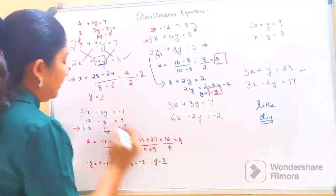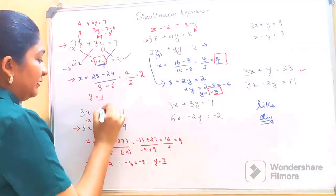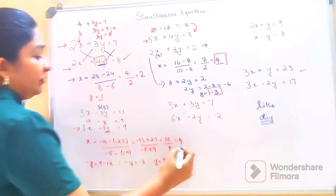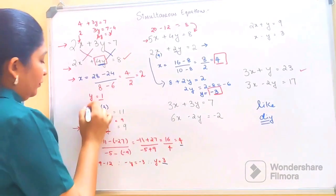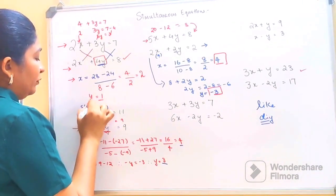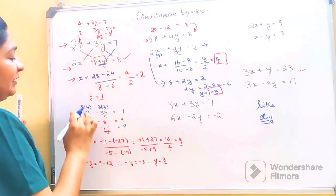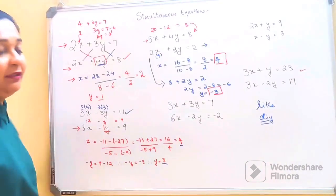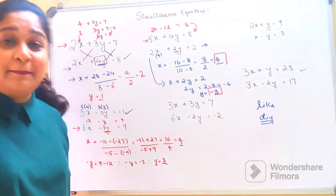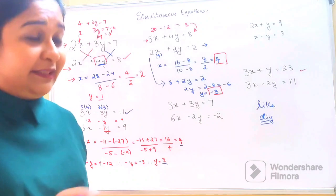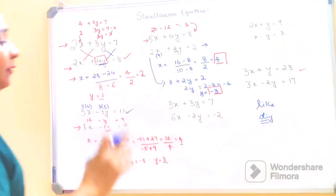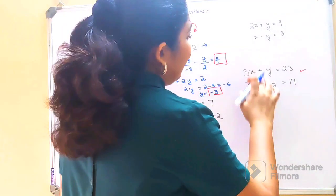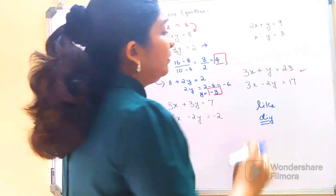Let's verify: y is 3, so checking the second equation — 5 into 4 gives 20, minus 3 into 3 gives minus 9. So 20 minus 9 equals 11, which matches. Both values are absolutely correct.